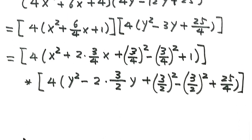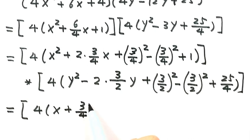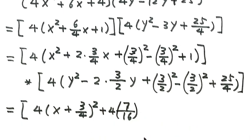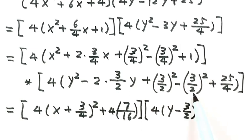Now we make a complete square from these three terms. For the x part we get (x plus 3/4) squared. Combining the constants 1 minus 9/16 gives 7/16, and with the factor of 4 outside that becomes 4 times 7/16. For the y part, these three terms give (y minus 3/2) squared. The simplified form becomes 4 times (x plus 3/4) squared plus 7/4, and 4 times (y minus 3/2) squared plus 16.